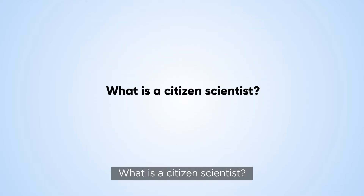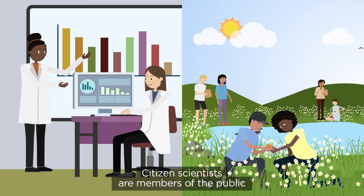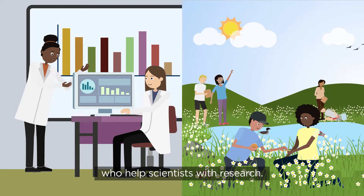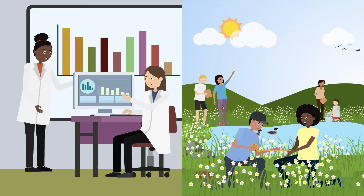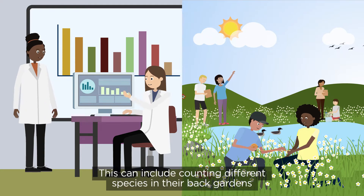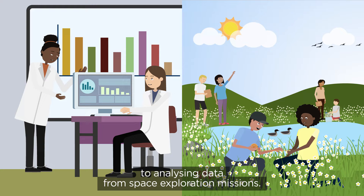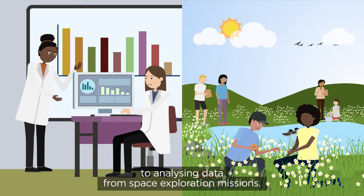What is a citizen scientist? Citizen scientists are members of the public who help scientists with research. This can include counting different species in their back gardens, to analysing data from space exploration missions.